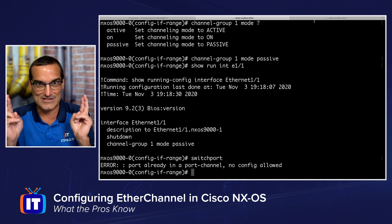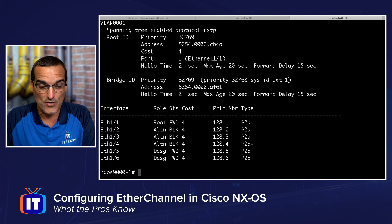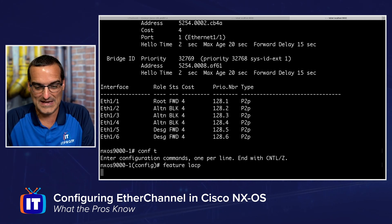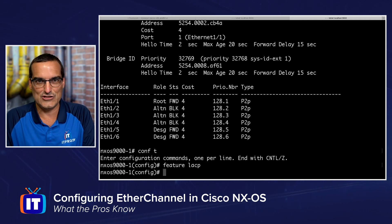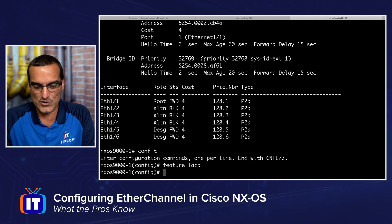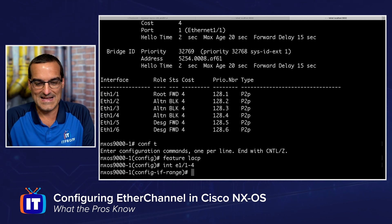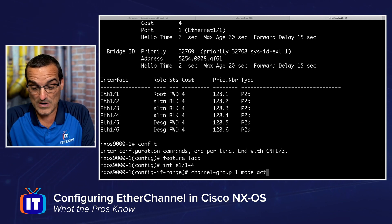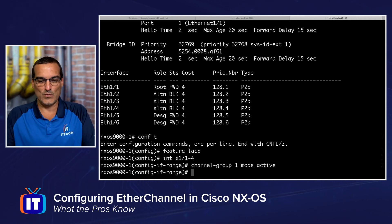We're going to cross our fingers that they're all identical, then go over to the other side and do 'feature LACP' — very easy to forget to install the feature, since we're not used to doing that in the IOS world. Then we'll say 'interface E1/1-4' to get into that range of interfaces, and say 'channel-group 1 mode active' on this side.